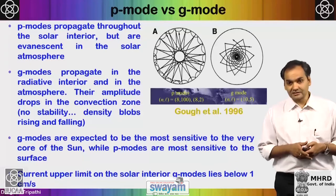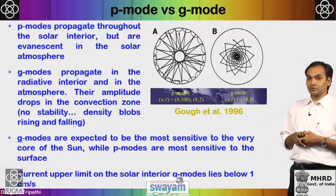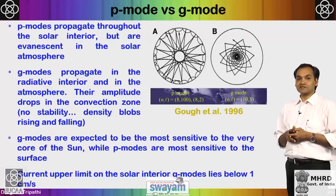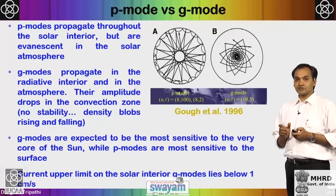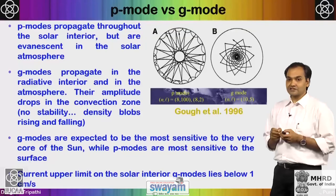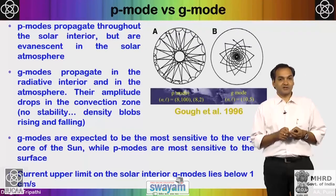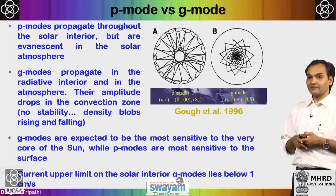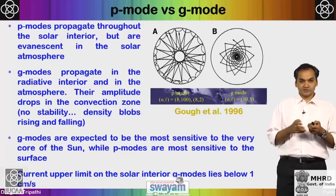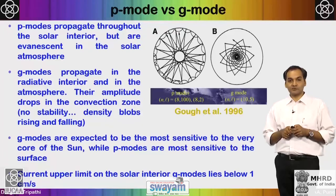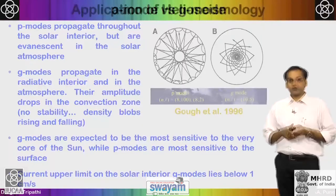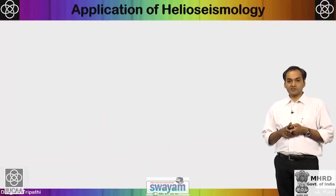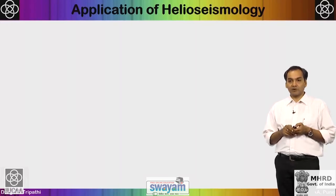The current upper limit on detected g-mode amplitude lies below 1 centimeter per second. Multiple claims of g-mode detection have been made, but due to these limitations they remain debated. Helioseismology has two approaches: global helioseismology, which gives the radial and latitudinal dependence of solar properties like sound speed and differential rotation; and local helioseismology, which in principle allows full 3D imaging of the solar interior.